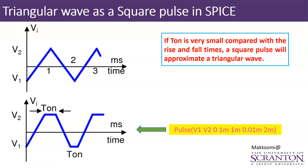Once we know how to represent a periodic pulse in SPICE, it is easier to use that to generate a triangular waveform. For example, suppose I have this triangular waveform going from V1 = −3 V to V2 = +3 V. It has a rise time of one millisecond from one peak to the next. Because it's symmetrical, the time period is two milliseconds, and the fall time is also one millisecond.